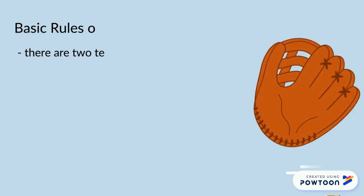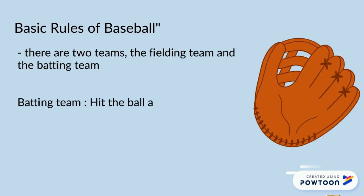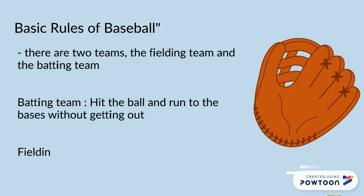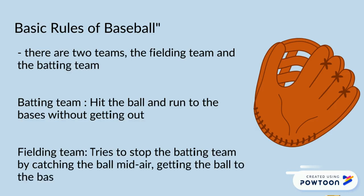The fielding team's main objective is to stop the batting team from getting any home runs, so they won't get as many points. In order to do this, the pitcher could throw balls, and the fielding team on the outside could try to catch the ball or try to get the player out.